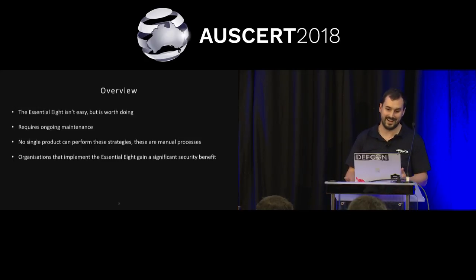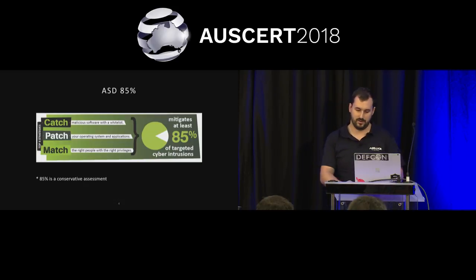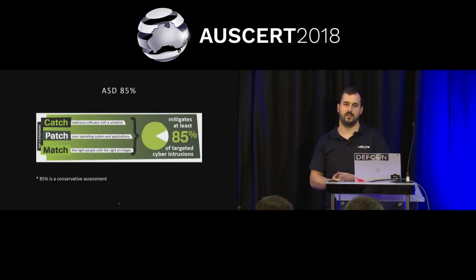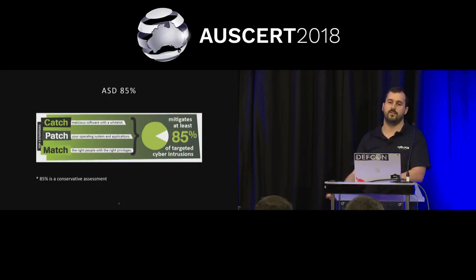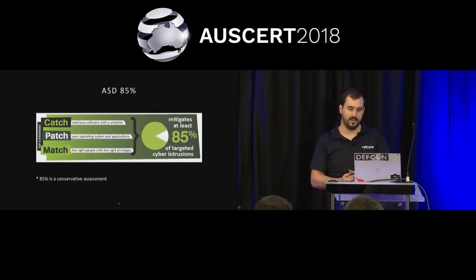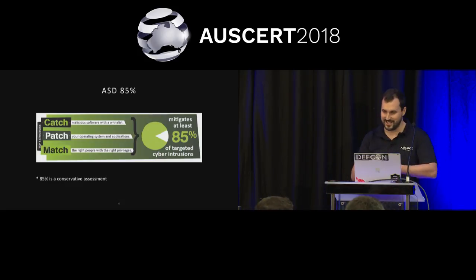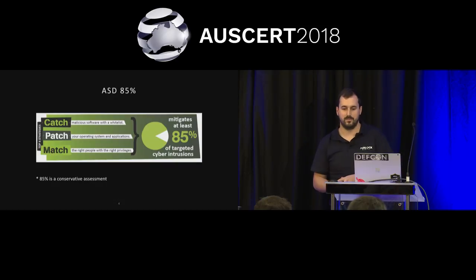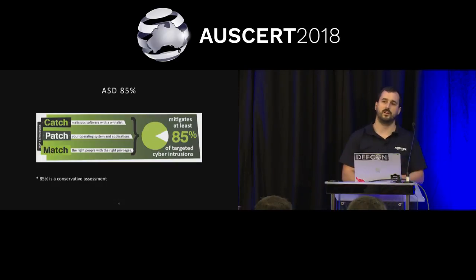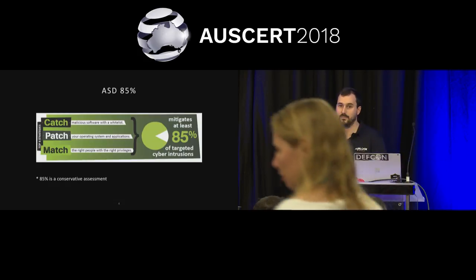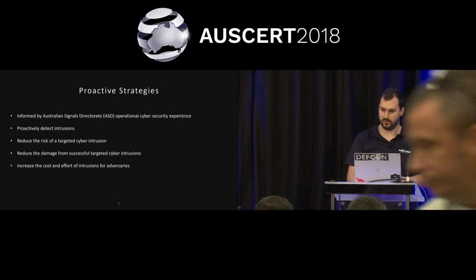Organizations that implement the Essential 8 gain a significant security benefit. ASD stated that implementing the top four strategies mitigates at least 85% of targeted cyber intrusions they see — and speaking to people from ASD, 85% is a really conservative estimate. There are standards from Homeland Security's National Cybersecurity and Communication Integration Center saying that 98% of incidents they responded to in 2014 and 2015 would have been mitigated by implementing a similar set of seven strategies.